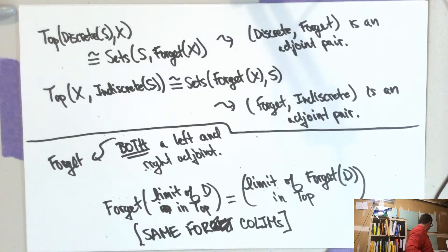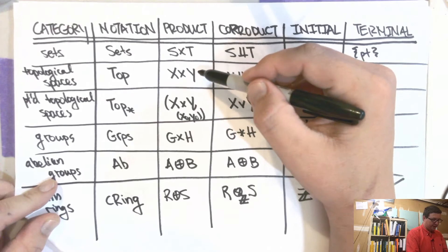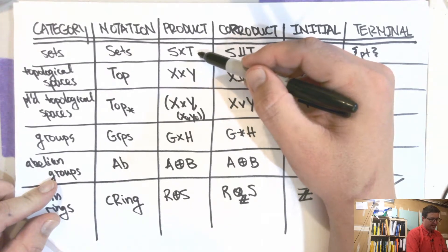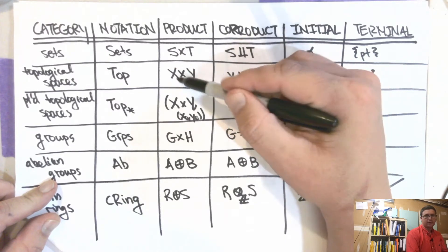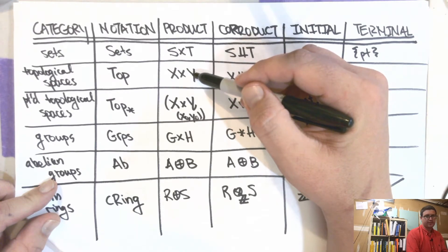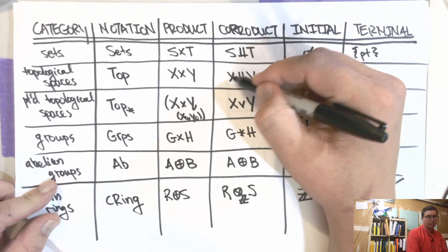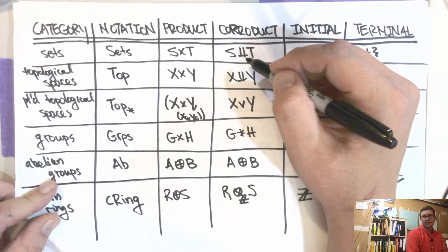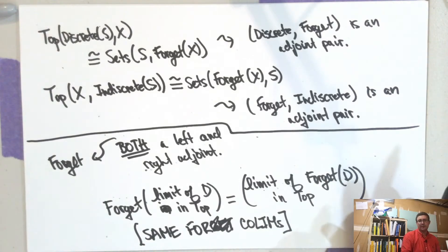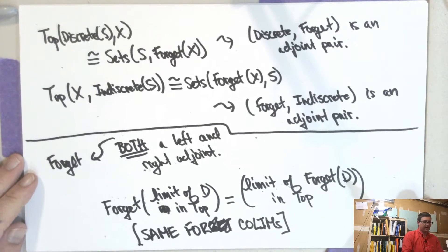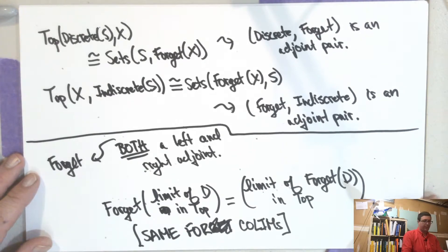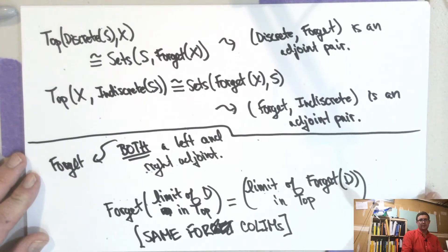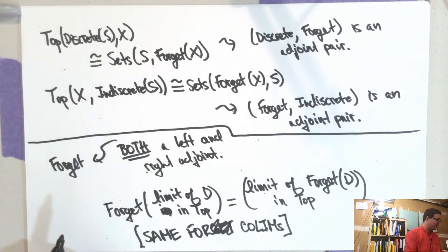That explains this: the product of topological spaces — the underlying set of a product of topological spaces is the product of the underlying sets. And the underlying set of a co-product of topological spaces is the co-product of the underlying sets. So the underlying set of the limit is the limit of the underlying sets — the two processes commute, and it's just a matter of figuring out which topology to put on the set you've constructed. That's a very nice feature of the category of topological spaces.